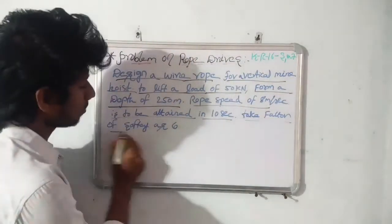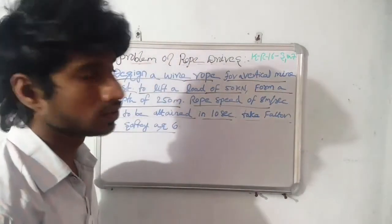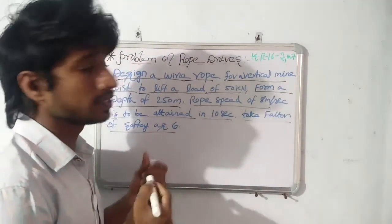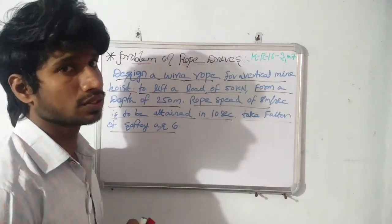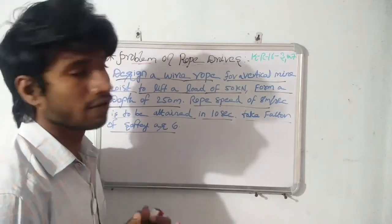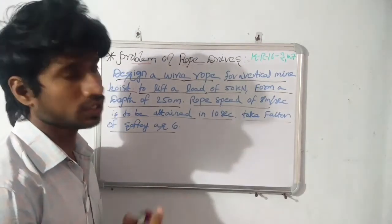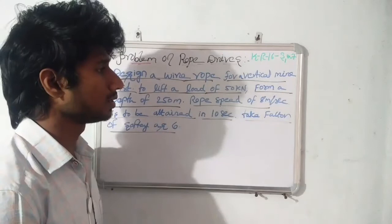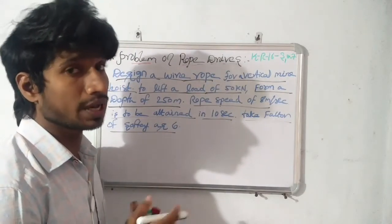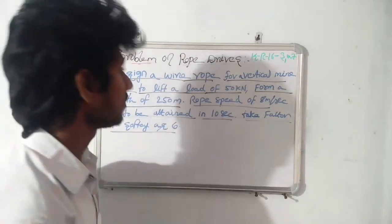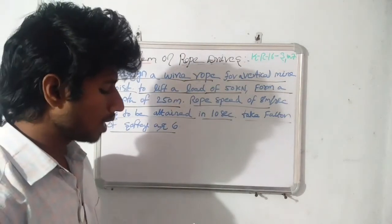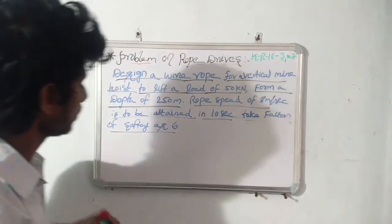Take factor of safety as 6. So this is the problem. Based on these given conditions, we are going to design a wire rope for mine hoist applications to lift a load of 50 kN from a depth of 250 meters. First of all, write down the given data provided here.